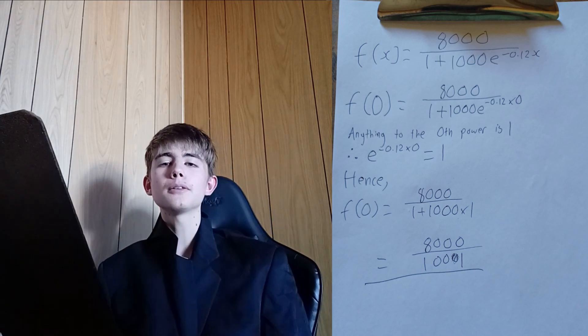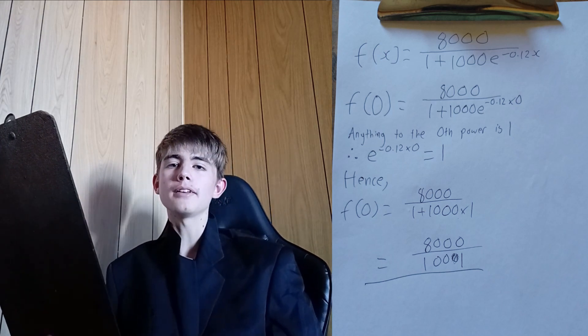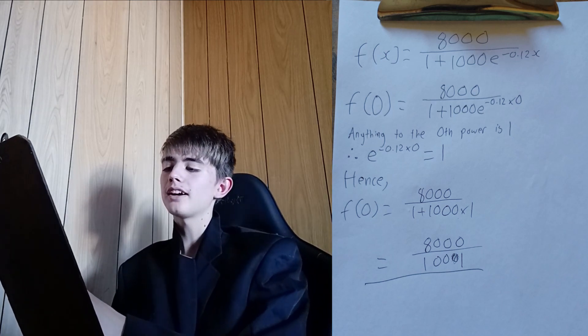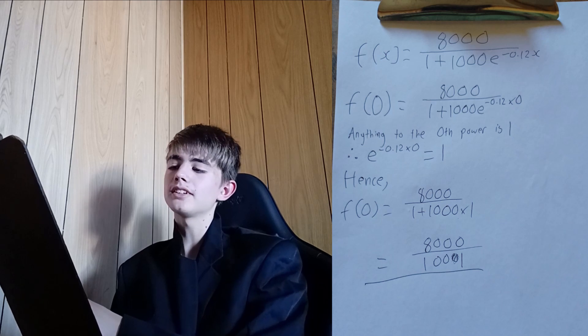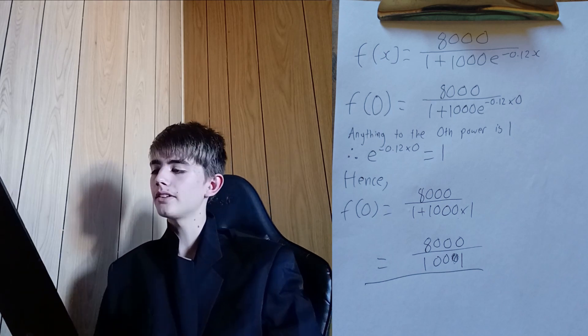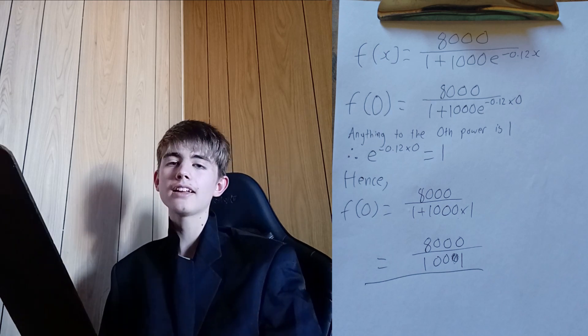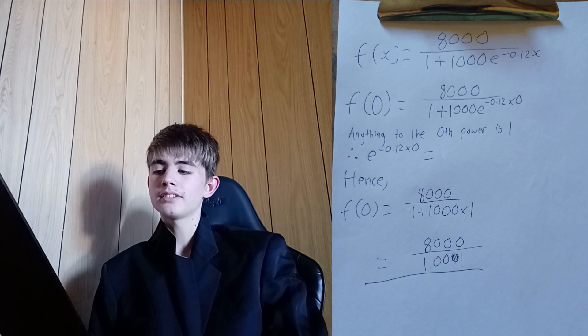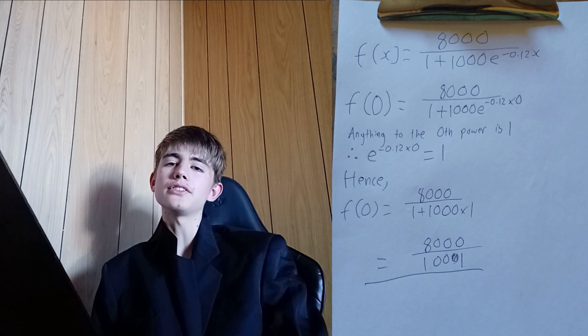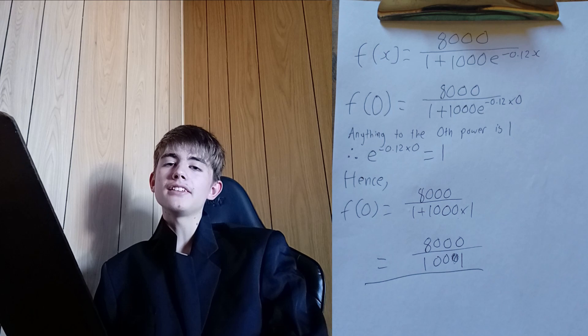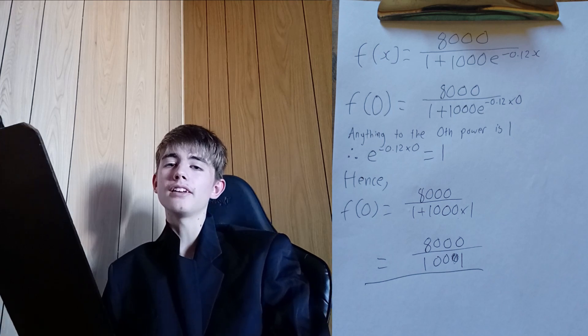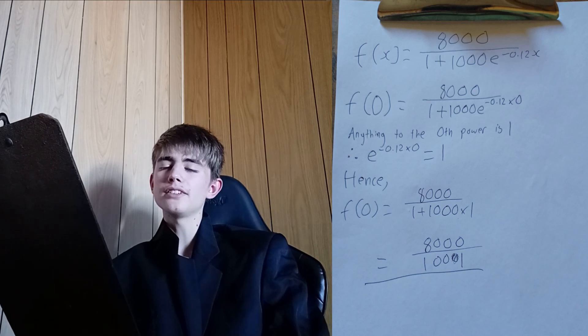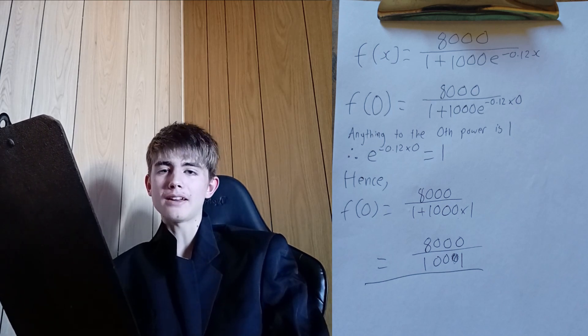Now, anything to the power of 0 is 1 by definition. So, e to the negative 0.12 times 0, that's just e to the 0, is equal to 1. Hence, f(0) equals 8000 divided by 1 plus 1000 times 1. So, 1000 times 1 is just 1000, and 1000 plus 1 is 1001. So we get our final answer of 8000 divided by 1001.